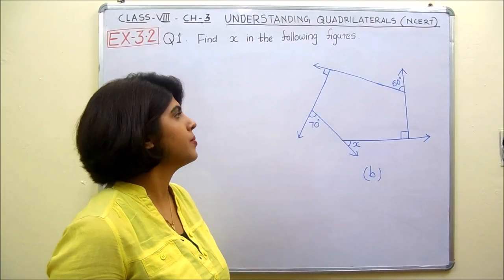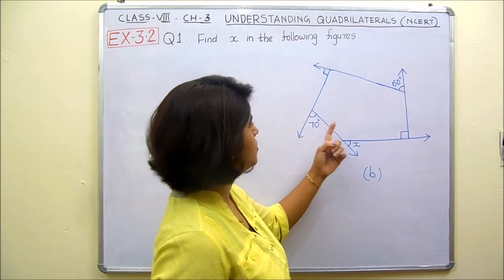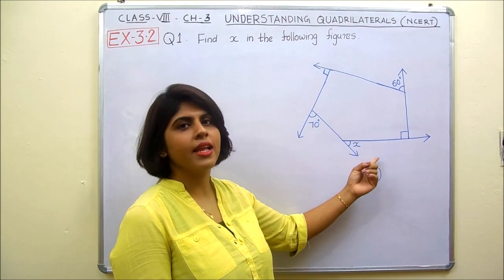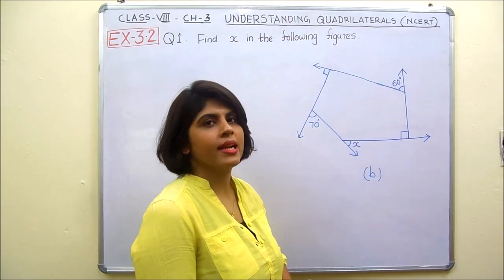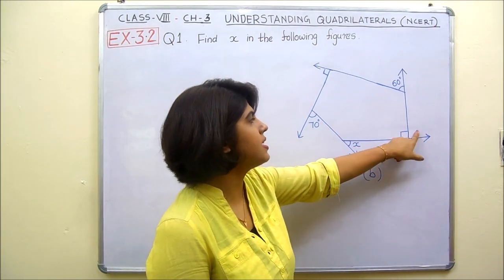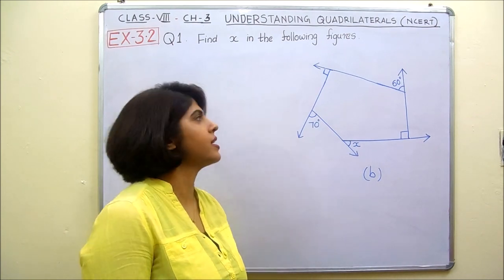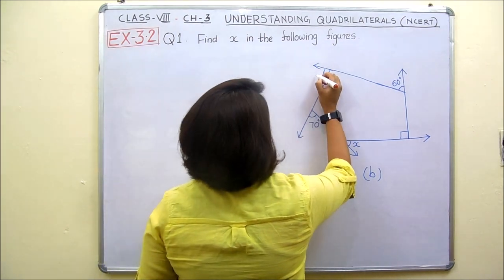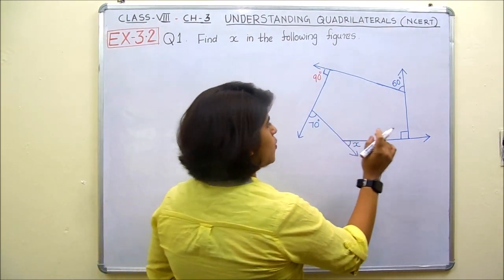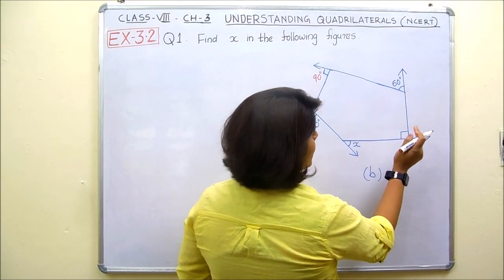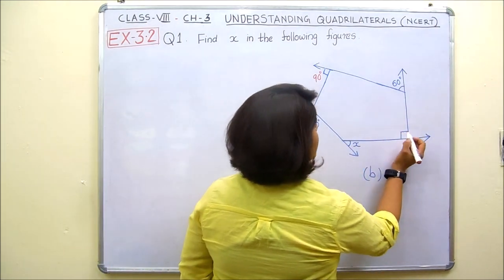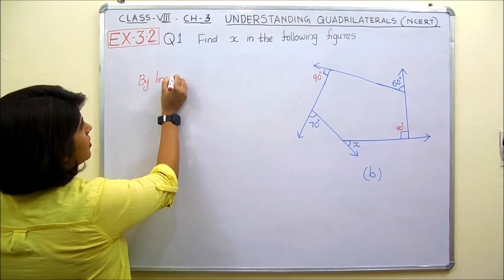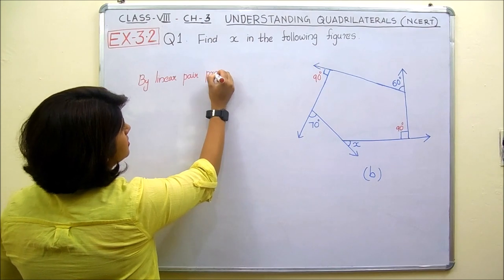Now we are coming to part B of the question. Here we are given a pentagon — a 5-sided figure — and we have to find the exterior angle X. Two exterior angles are given directly, and we need to find the remaining exterior angles to solve for X. One angle symbol represents a 90-degree exterior angle. For another vertex, we know the interior angle is 90 degrees, and since it forms a linear pair, we can find the exterior angle from that.